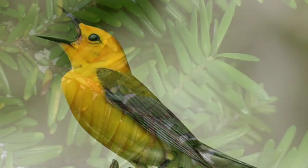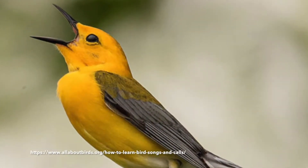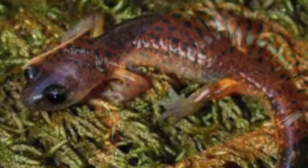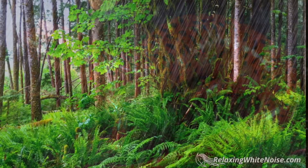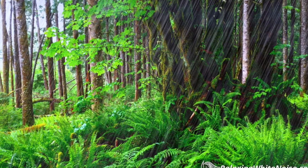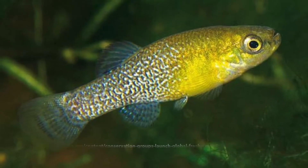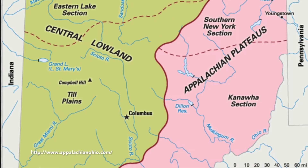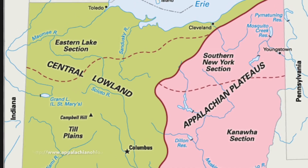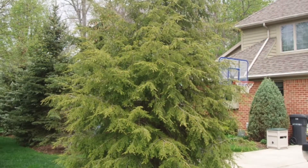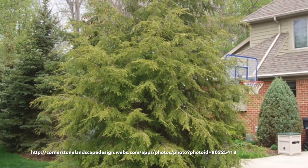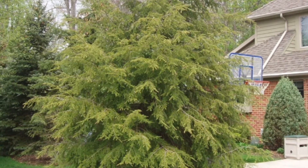Hemlock habitats host 100 bird species and the fallen needles provide moist habitats for thousands of invertebrates and moisture-needing salamanders and newts. The leaf litter and roots help filter rain and snow water, and the dense canopies help moderate water temperatures in nearby streams and bodies of water. On the Appalachian plateau in southern and eastern Ohio, hemlock is considered a foundation species in the forest ecosystems where it occurs. Eastern Hemlock is also a popular landscape tree where moist soils exist; in such landscapes, the trees can also withstand pruning and shaping.